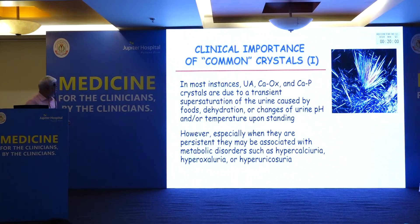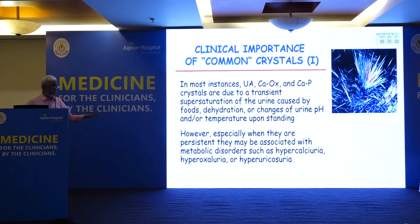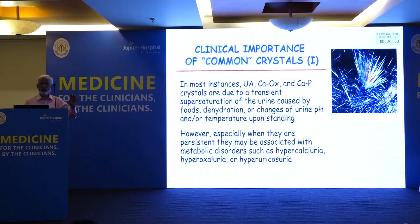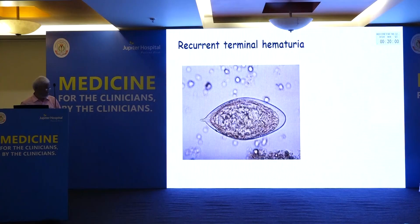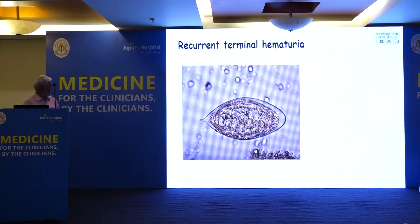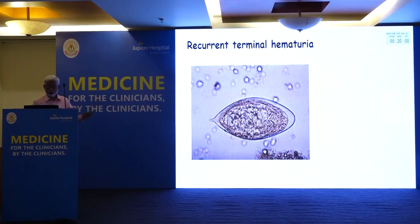Common crystals include uric acid crystals, calcium oxalate crystals, and calcium phosphate crystals. If transient, they may be due to supersaturation, diet, or dehydration. But persistent crystalluria is significant. If a patient presents with terminal hematuria and parasites with RBCs are seen, this suggests Schistosoma haematobium infection.